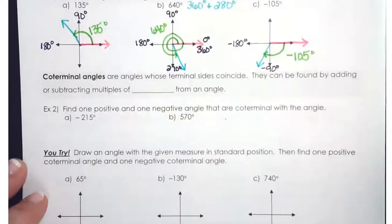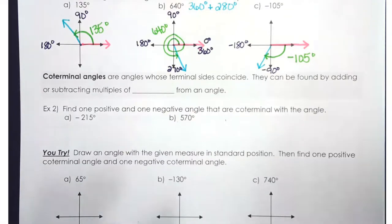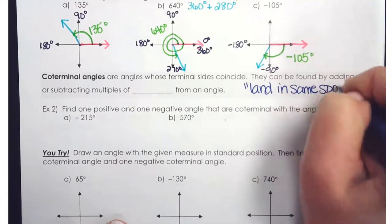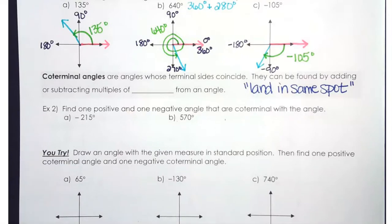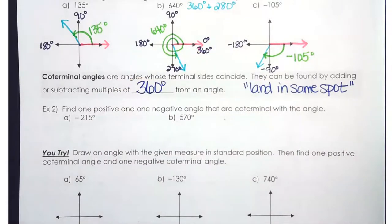The next learning target concerns coterminal angles. Coterminal angles are angles whose terminal sides coincide — meaning they land right on top of each other, in the same spot. Through how many degrees would you rotate until they land on the same spot again? A whole circle — 360 degrees. So coterminal angles in degrees are found by adding or subtracting multiples of 360 from an angle.